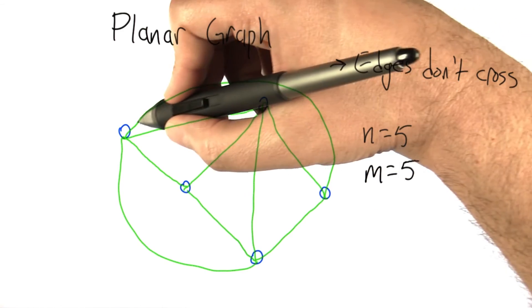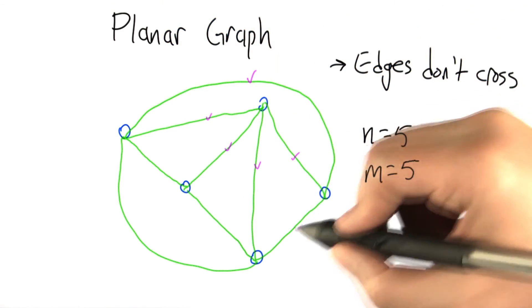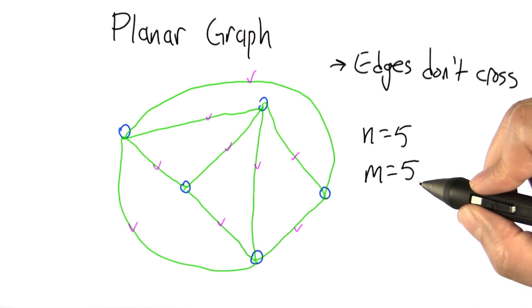So how many edges do we get here, all told? We've got 1, 2, 3, 4, 5, 6, 7, 8, 9. And at least in this example, the number of edges seems to need to be less than or equal to 9.